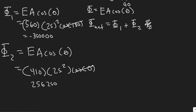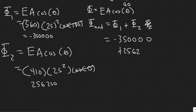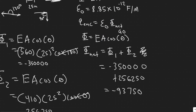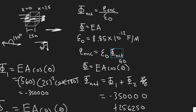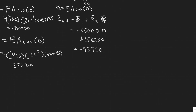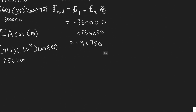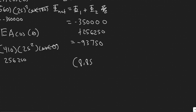Now we add the two fluxes: minus 350,000 plus 256,250 gives us a net flux of minus 93,750. We then plug this into our equation: charge enclosed equals epsilon naught multiplied by the net flux, so 8.85 times 10 to the minus 12, multiplied by minus 93,750.